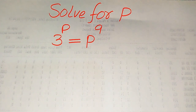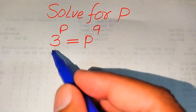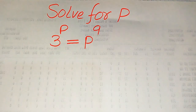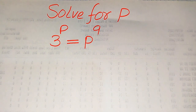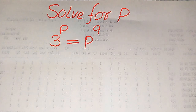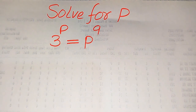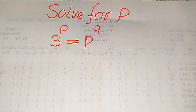Hello everyone. How to solve this problem for the values of p, if we have 3 to the power of p equals p to the power of 9. We find all the roots of this equation and then verify which of the roots are solutions and which are extraneous roots. I hope you like this method, but if you have any other method in mind, please don't hesitate to write it in the comment section.